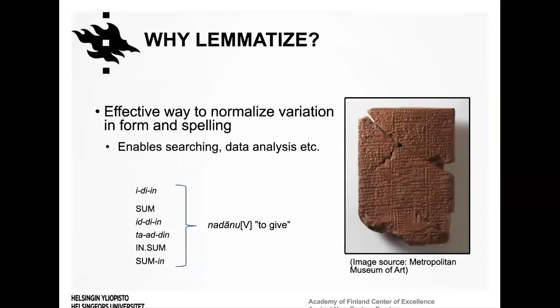Akkadian was written in the cuneiform script — a complicated writing system combining syllabic signs and earlier Sumerian logograms. Spelling conventions were not standardized, which often results in various different ways to spell the same word form. For example, the word forms 'iddin,' 'iddinu,' 'SUM,' and 'SUM-in' can all represent the same word form meaning 'he or she gave.'